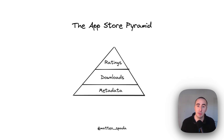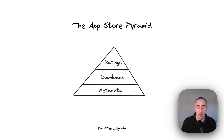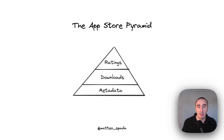To understand how to rank high for a specific keyword, we need to understand how the App Store works. You need to imagine your ASO strategy like a pyramid. At the base of this pyramid you have your metadata — like the title, subtitle, and your keywords. You need to select the right keywords to rank high for terms relevant to your application. Above the metadata you have downloads. Without downloads you can't rank for any keywords, which is why ASO off-page is so important. Different traffic sources help you rank high for specific keywords.